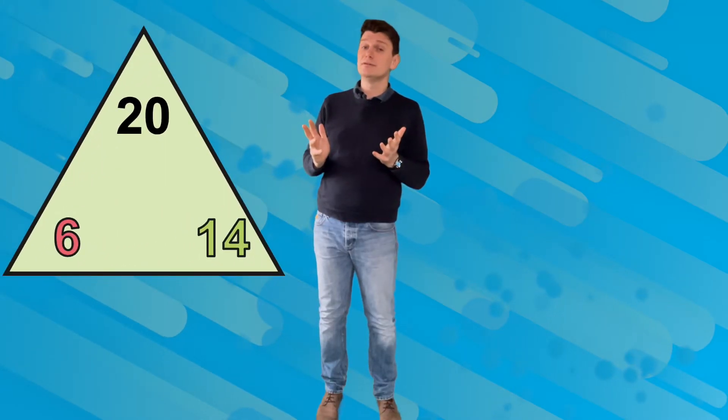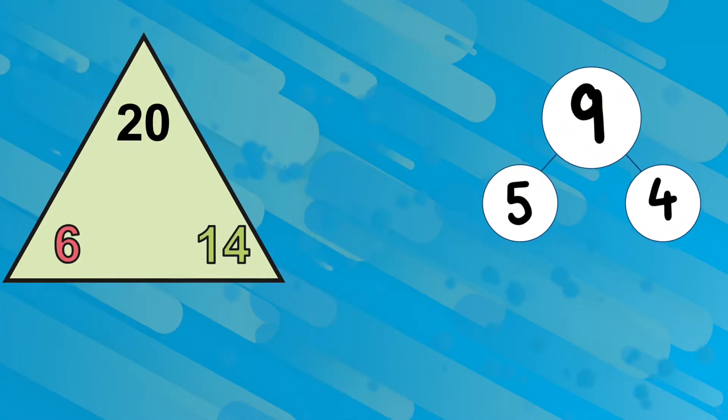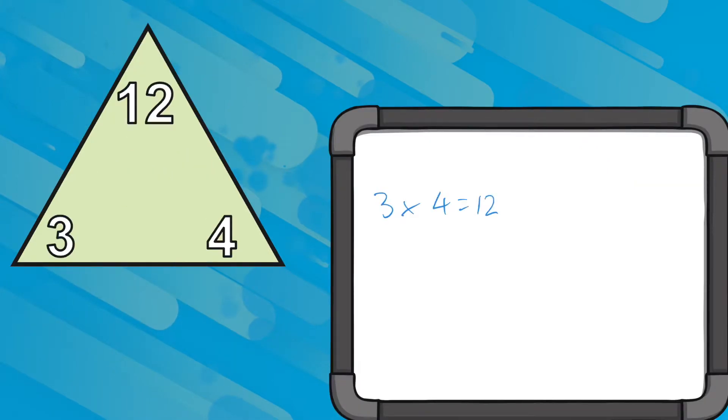They're often represented with triangles, but you might also see them represented using part-whole models. Fact families can also show the relationships between numbers involving multiplication and division.